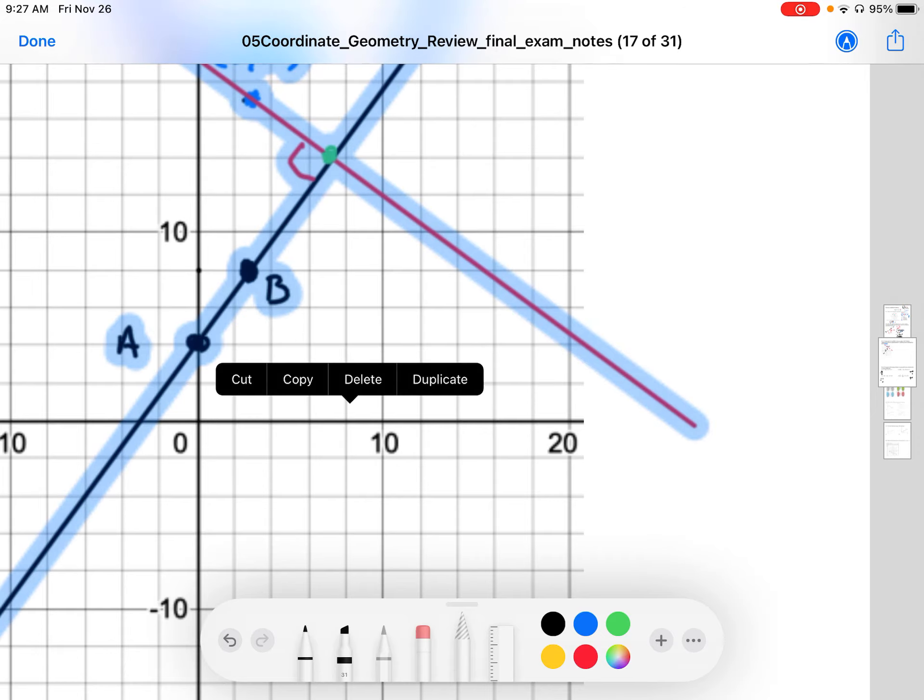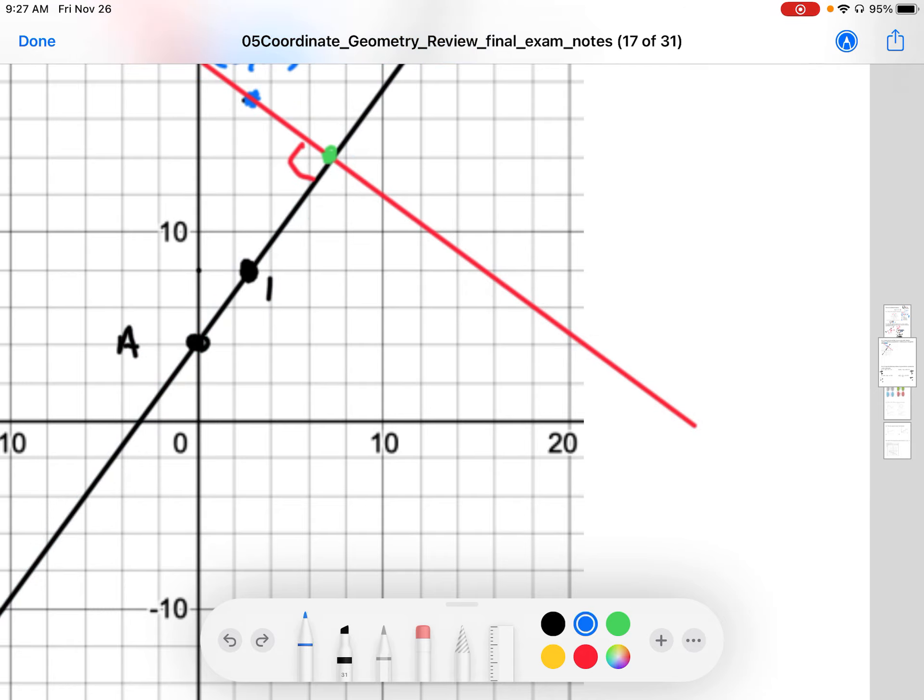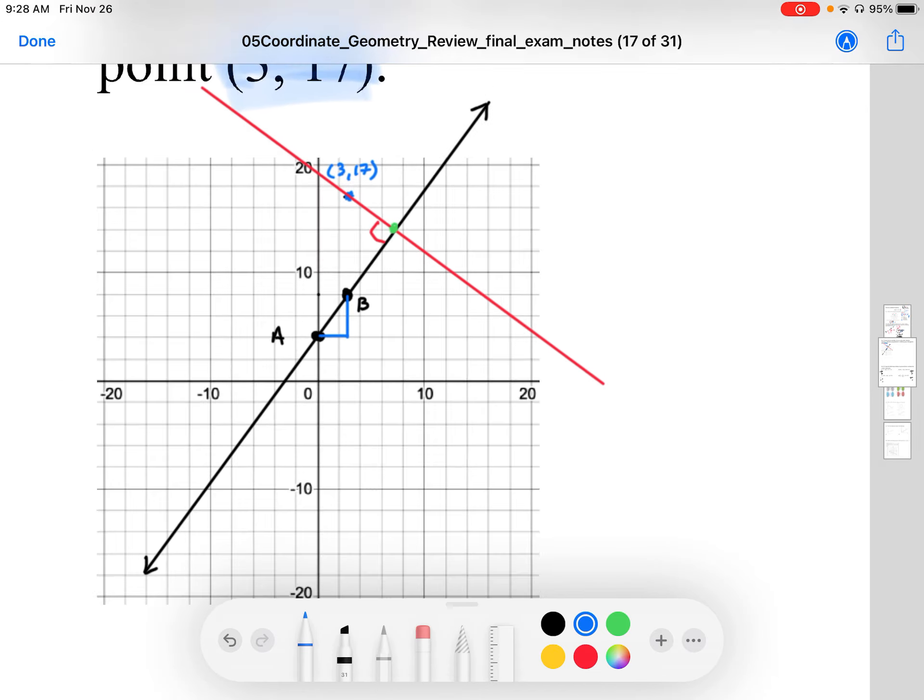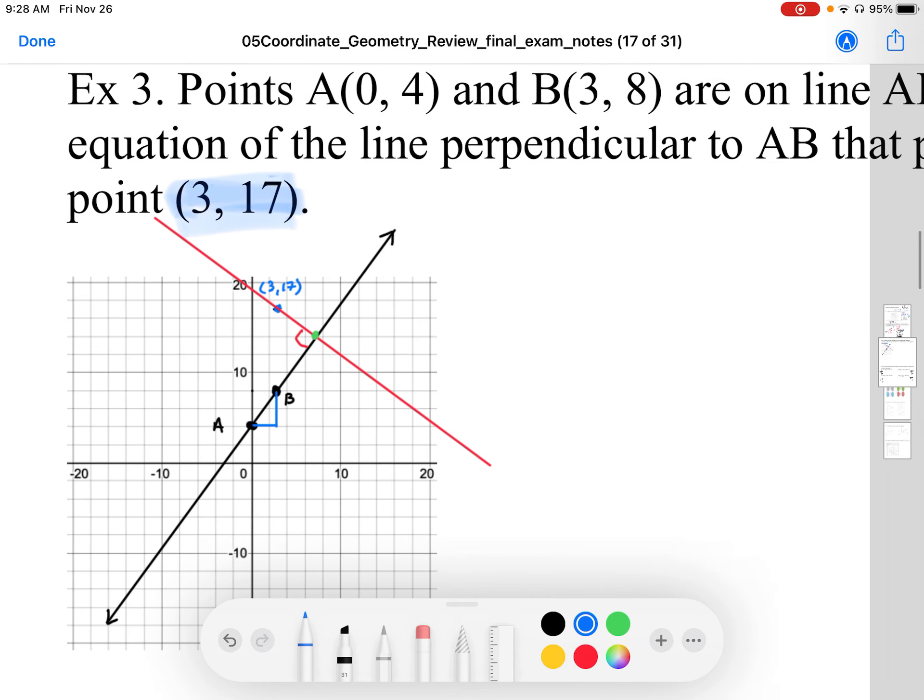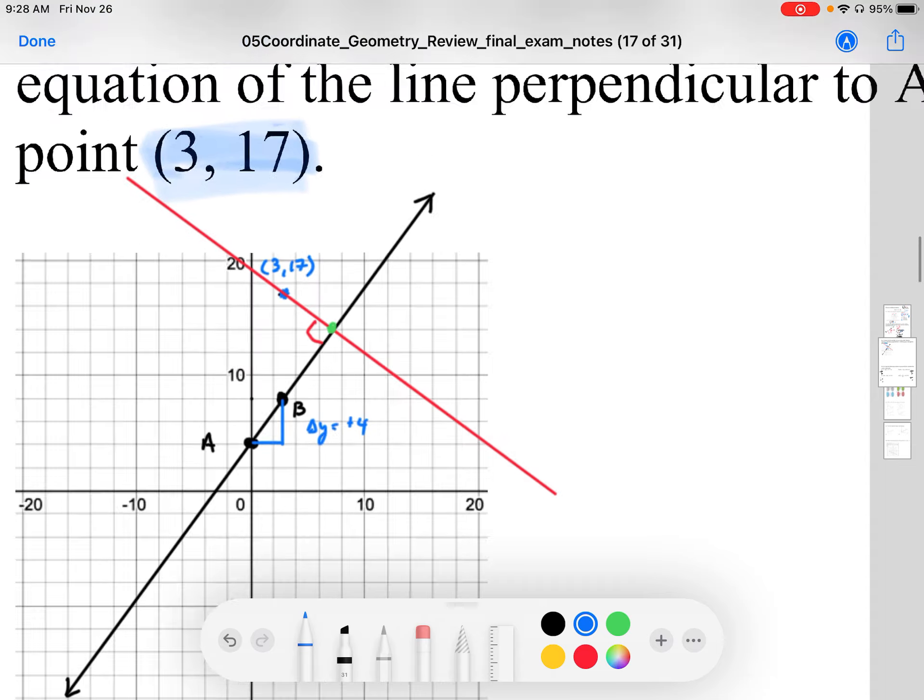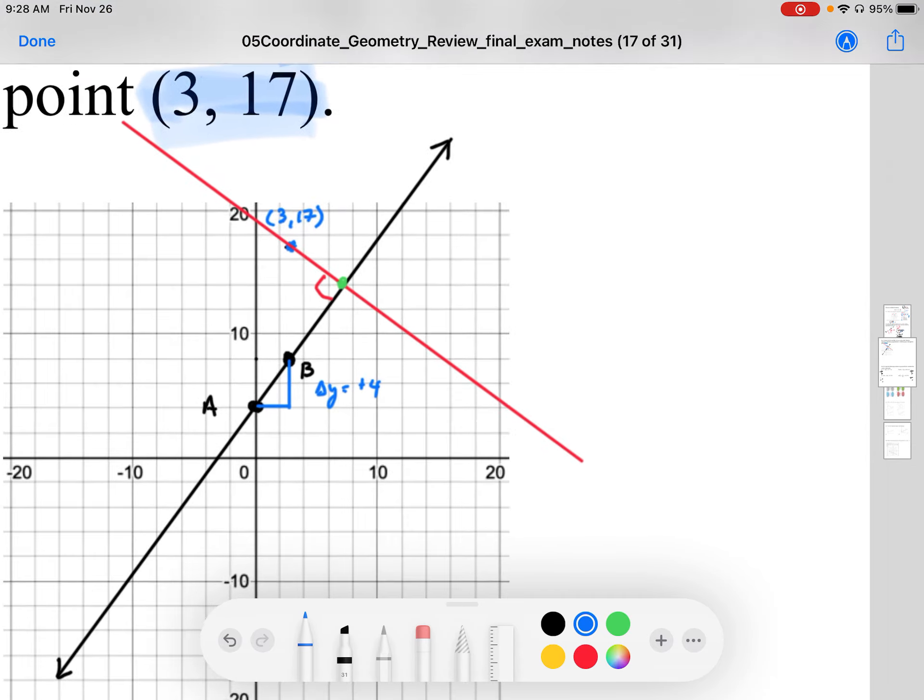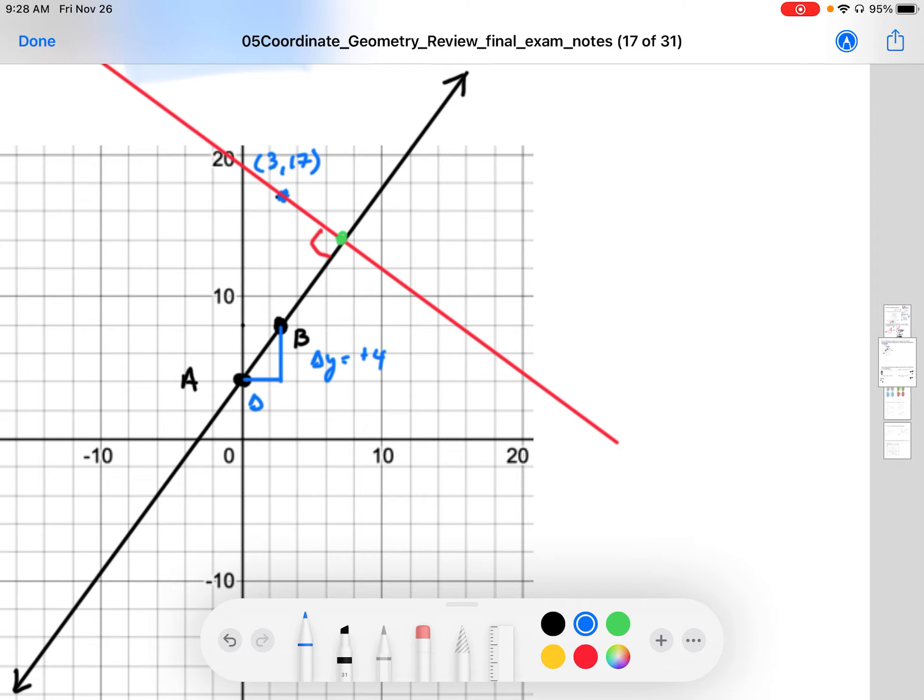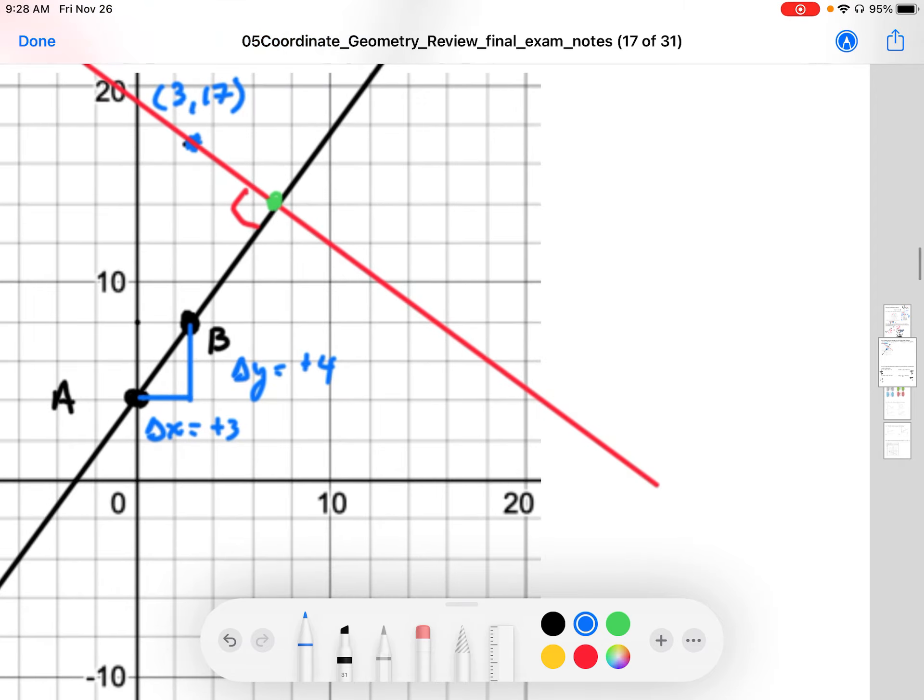So sketching in my slope triangle, I know that the rise between the two coordinates is going to be 8 minus 4, so change in y equals plus 4. The run is going to be from 0 to 3, so 3 minus 0, my change in x is positive 3. So we have a positive 4 over 3 slope.